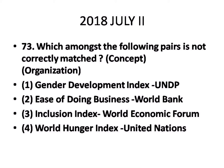This question was asked in 2018 July Paper 2: which among the following pairs is not correctly matched? The Gender Inequality Index is issued by UNDP, measuring gender gaps in human development across three dimensions - health, knowledge, and living standards. Ease of Doing Business is published by World Bank. The Inclusive Index report is published by World Economic Forum - both correct. The World Hunger Index is published by the International Food Policy Research Institute, so the fourth option is the wrong match.